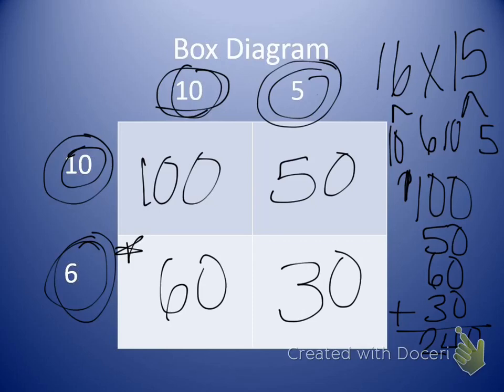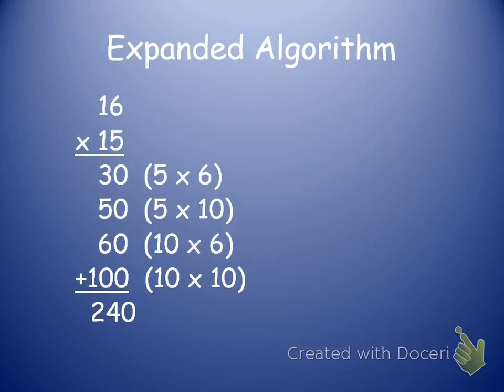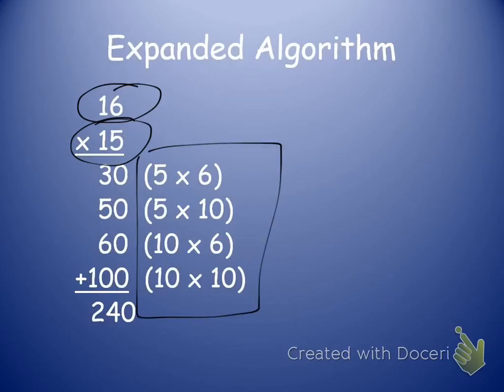Today we're going to talk about using the expanded algorithm, which is essentially the box diagram, but without the box. The expanded algorithm looks like this. I have my two numbers multiplied together, 16 and 15. And just like we did when we multiplied by a one-digit number, we're going to write my answers down below. We're not going to worry about carrying anything at this point.